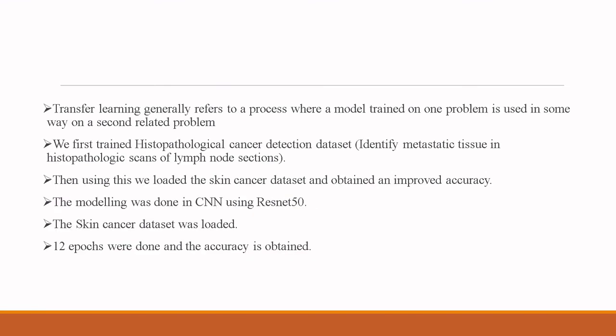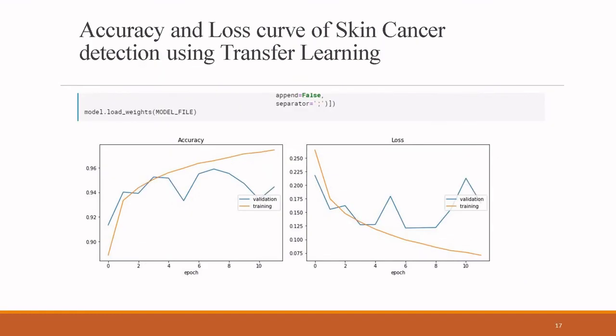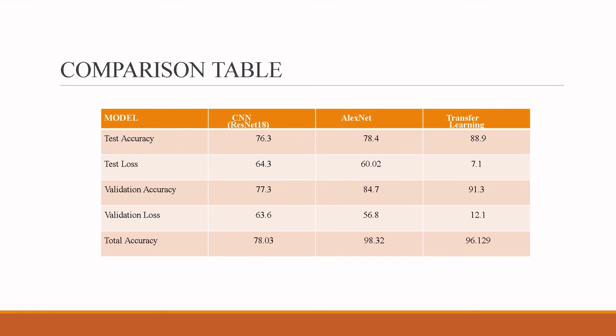For transfer learning, we first trained on the histopathological cancer detection dataset — identifying metastatic tissue in histopathological scans of lymph node sections. Using this, we loaded the HAM10000 skin cancer dataset and obtained improved accuracy. The modeling was done in CNN using ResNet-15; 12 epochs were run and accuracies were obtained. The accuracy and loss curves for skin cancer detection using CNN and transfer learning show that using CNN the accuracy obtained is 78.03%, using AlexNet it is 98.32%, and using transfer learning it is 96.3%.